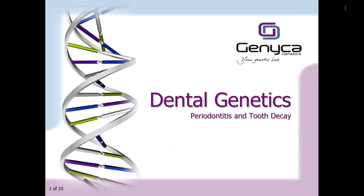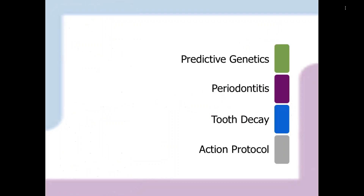Hello, everyone. Today we will be talking about two diseases within dental genetics: periodontitis and tooth decay, and how to delay them and prevent their onsets. First, we will begin with predictive genetics and then talk about the genetics and pathogenic risks of periodontitis. We will move on to the genetics of tooth decay and finally end with how to perform a genetic study of both of these diseases.